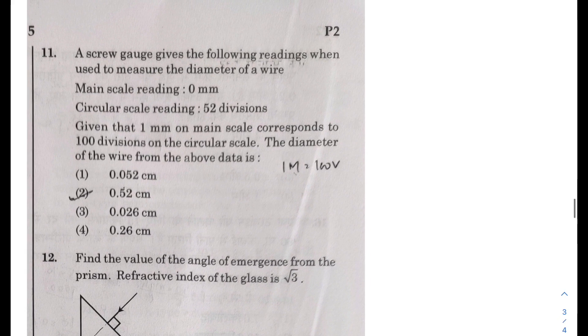The second part, 11 to 20. Problem 11: A screw gauge gives the following reading when used - main scale reading 0, circular scale reading 52 divisions. Given that 1 mm on main scale corresponds to 100 divisions, that means the least count is equal to 1 over 100 mm, or you can write it as 1 over 1000 centimeter.